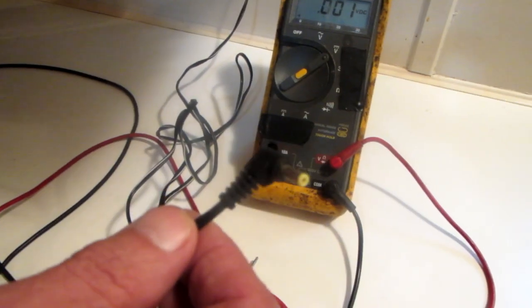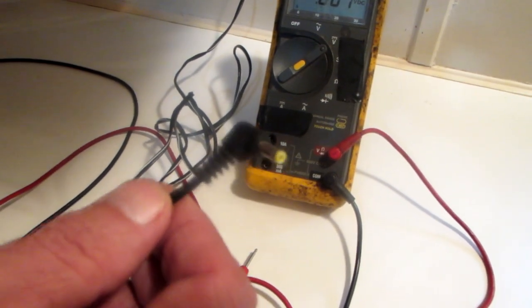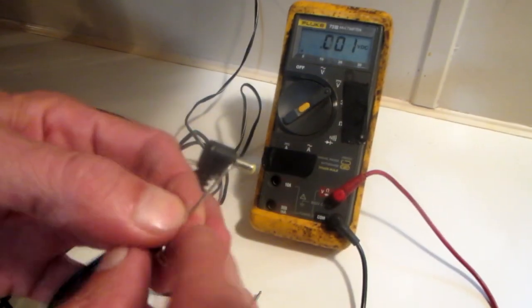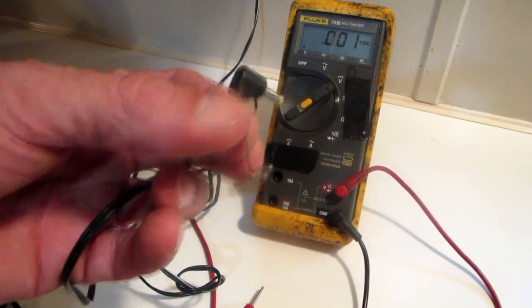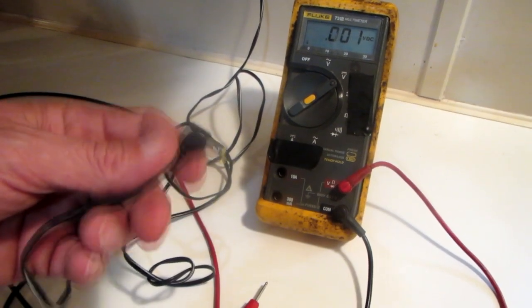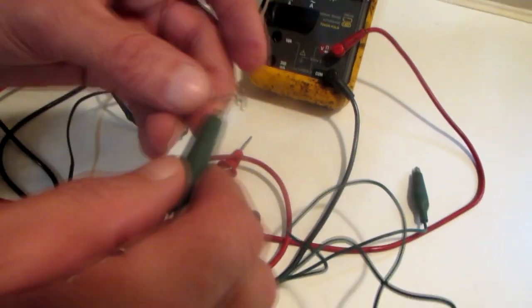Here I have another adapter. This one has an output of 4.5 volts, a different type of plug. See, it's a hollow shaft, so you know that a pin has to be inserted in the end of that. The inside is probably positive and the outside of the shaft is negative. So I just take a regular sewing needle and hook a jumper lead up to it.